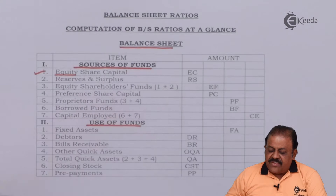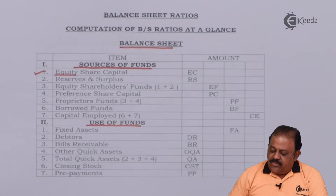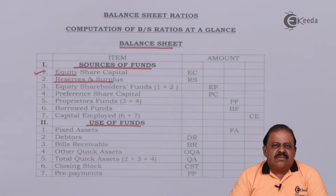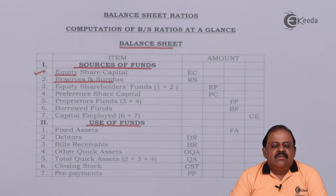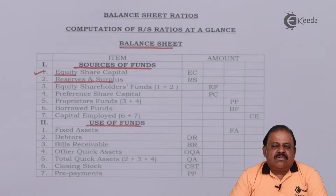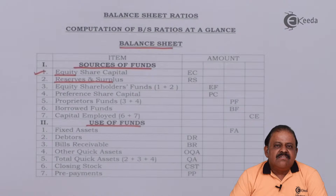To equity share capital we add reserves and surplus. Reserves and surplus includes general reserve, capital reserve, securities premium, capital redemption reserve, and dividend equalization fund. We are required to deduct from reserves any fictitious assets or miscellaneous expenditure not written off, for example preliminary expenses not written off, discount on issue of debentures or shares, discount on redemption of shares or debentures, or profit and loss account debit balance, that is loss, which is required to be deducted from reserves and surplus.